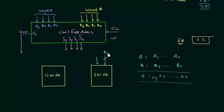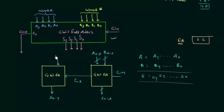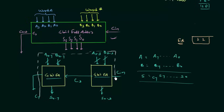The first 4-bit full adder takes B0 to B3 and A0 to A3 as inputs, with carry input equal to 0, producing sum bits S0 to S3 and carry output C3. C3 then feeds as the carry input into the second 4-bit full adder, which adds B4 to B7 and A4 to A7, producing sum bits S4 to S7 and final carry output C7. This is how two 4-bit full adders give us an 8-bit full adder. That's all for this presentation — if you have doubts, please ask in the comment section.